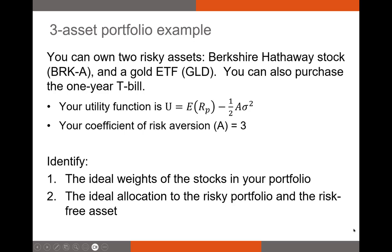Let's put this into practice. I have an example with two risky assets — Berkshire Hathaway stock, BRKA, and a gold ETF with ticker symbol GLD. You can also purchase as much as you want of one-year T-bills. We know our utility function and, having undertaken surveys, we believe our coefficient of risk aversion is three. First, we'll identify the ideal weights of the stocks in our portfolio, then we'll identify the ideal allocation to the risky portfolio versus the risk-free asset. Let's move over to Excel.